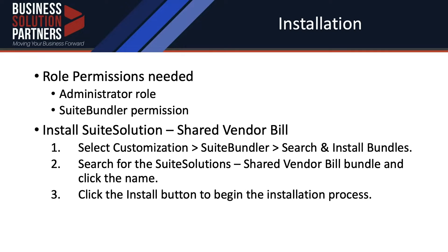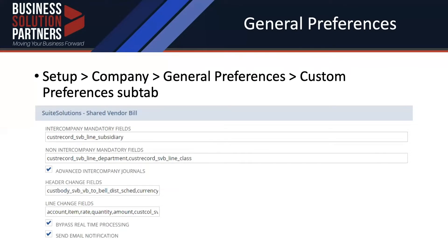Once the installation process completes and you've refreshed the page until it's 100% installed, you can configure the general preferences for Shared Vendor Bill. That's under Setup > Company > General Preferences. If you scroll down to the bottom of the page, you'll see a sub-tab for custom preferences showing fields specific to suite solutions. When you install the bundle, there's admin documentation you can download that walks you through these initial steps. The values populated in these fields are included in that admin documentation, so during setup you can just copy and paste that information.